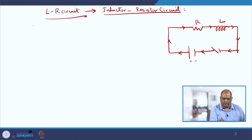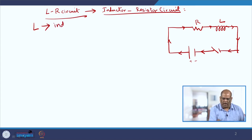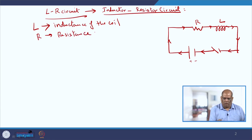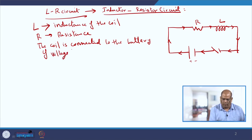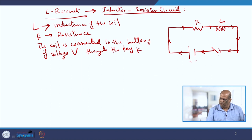Let us start with some definitions. L is the inductance of the coil, R is the resistance. The coil is connected to a battery of voltage V through the key K, which can be read as switch.